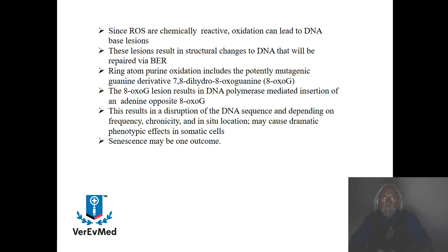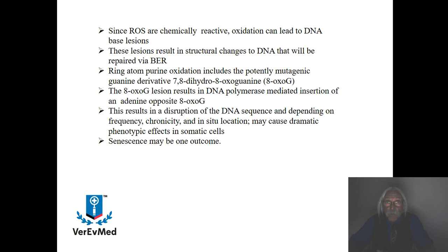Since reactive oxygen species are chemically reactive, oxidation can lead to protein degradation, lipid degradation, and of course DNA-based lesions. Those oxidized DNA lesions result in structural changes to DNA that have to be repaired — just like we just did with base excision repair. One example is when you get ring atom purine oxidation — one of the atoms in the ring of guanine gets oxidized. That means it's no longer the same chemical or nucleotide base, so it's potentially mutagenic. That guanine derivative is called 7,8-dihydro-8-oxoguanine, or 8-oxo-G.